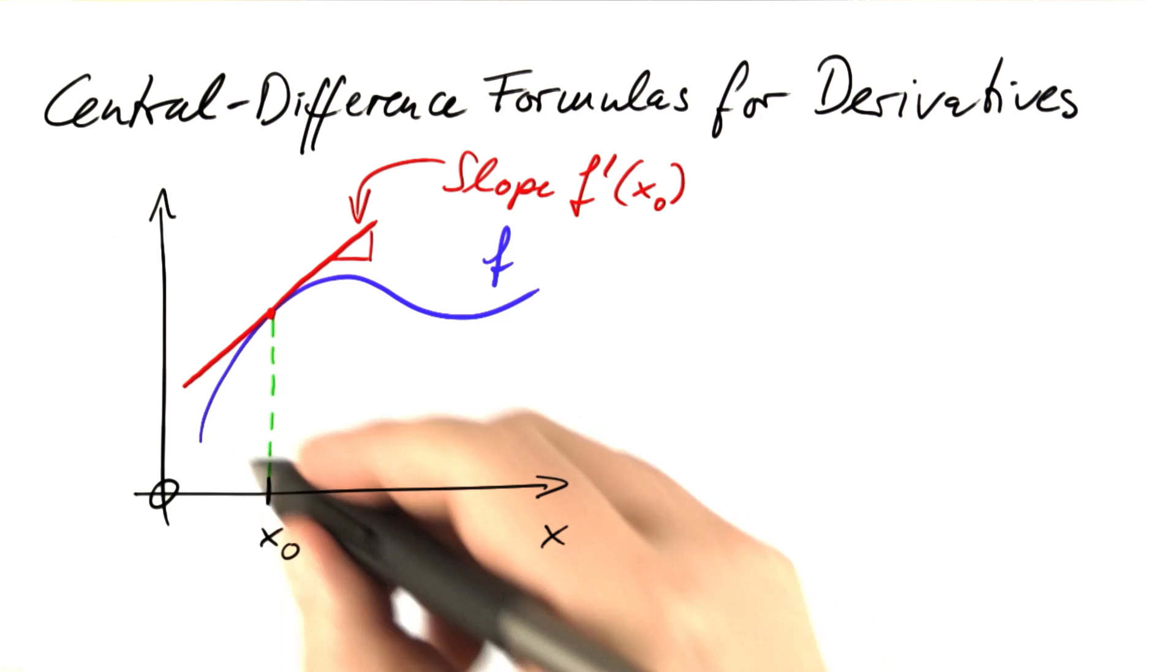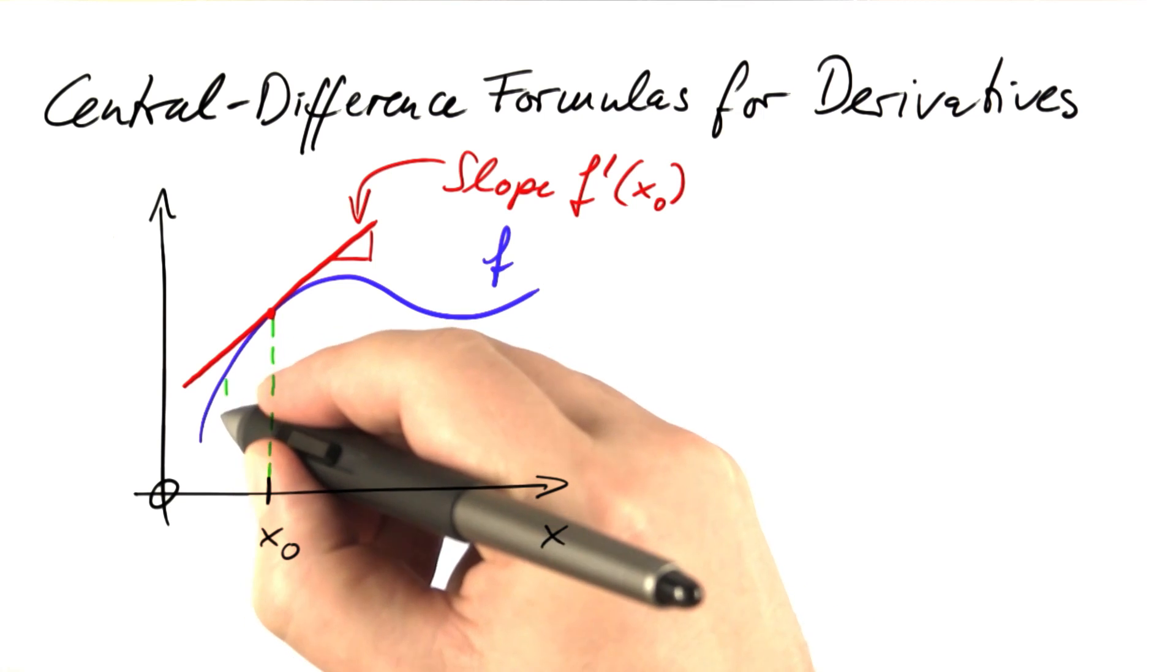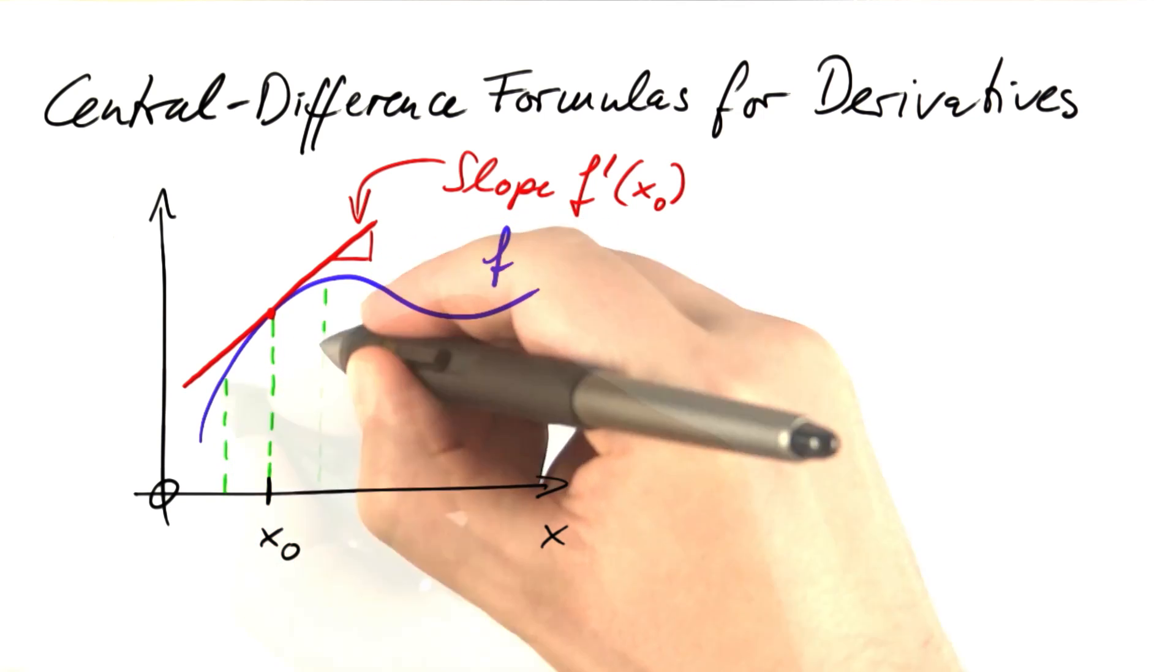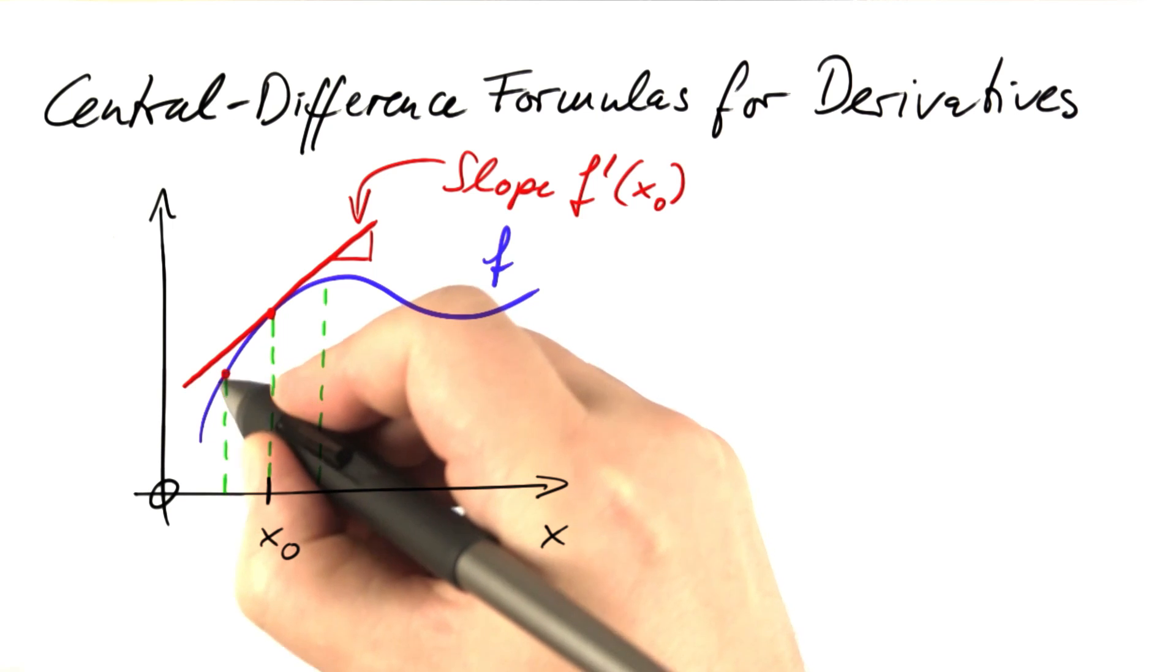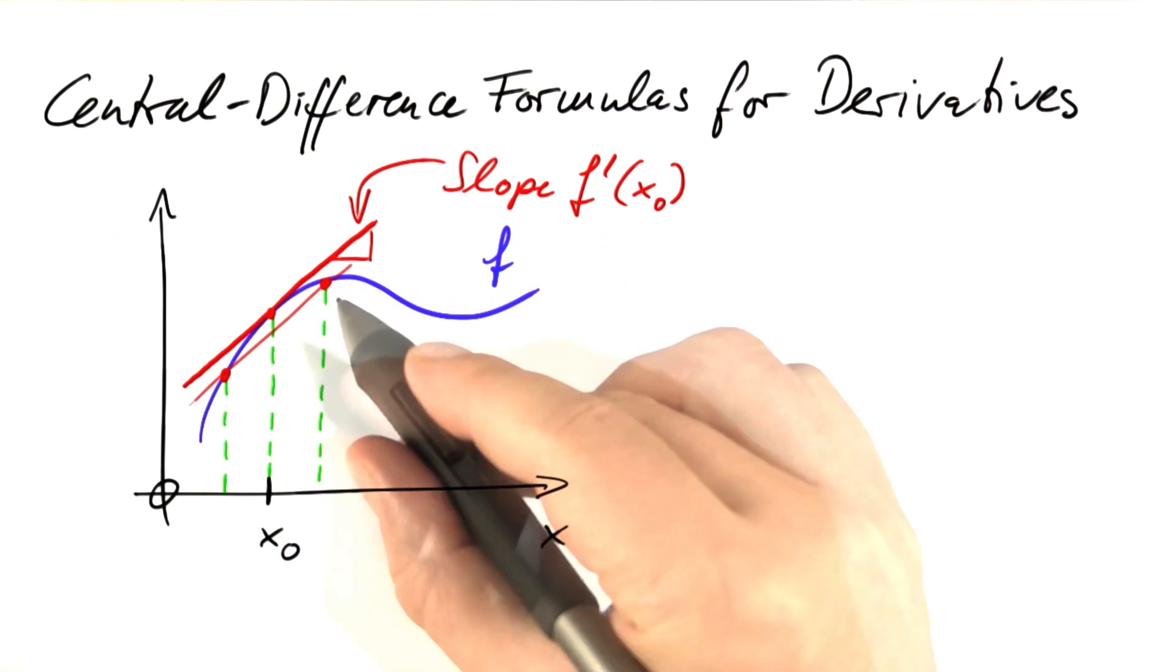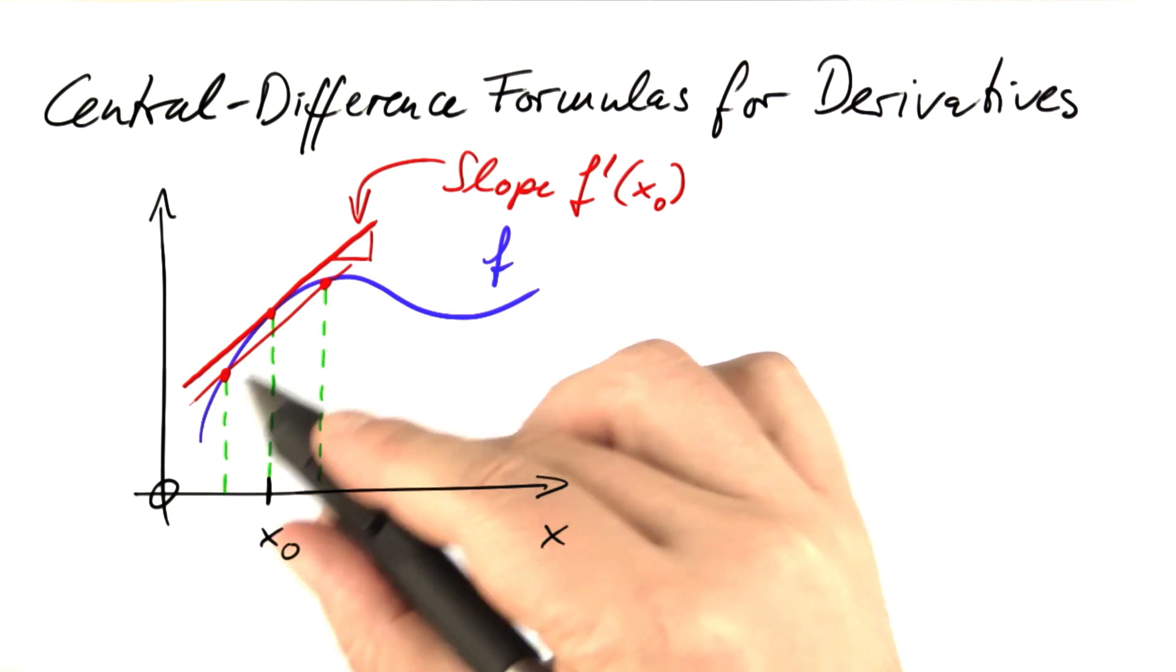A simple trick is to go a little to the left and a little to the right, determine the points of the function left and right, and then connect these. Typically this works far better.